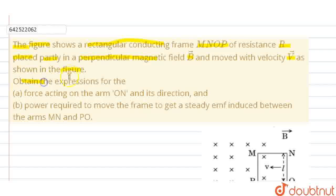Obtain the expressions for (a) force acting on the arm ON and its direction, and (b) power required to move the frame to get a steady EMF induced between the arms MN and PO. Let's solve the question.